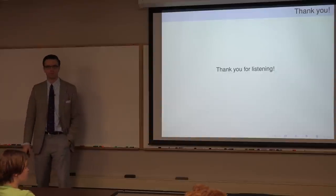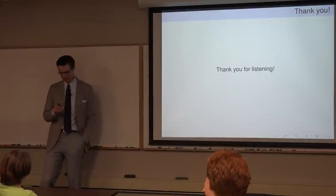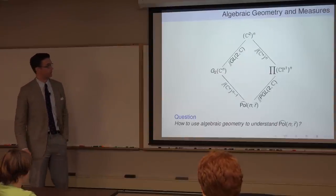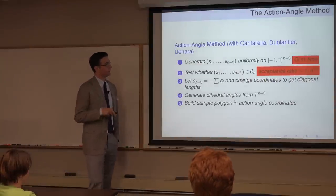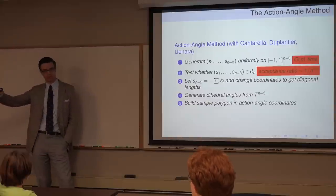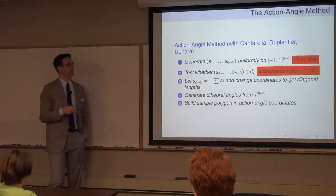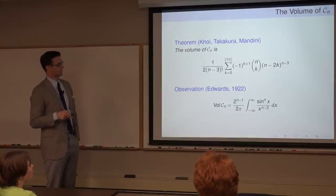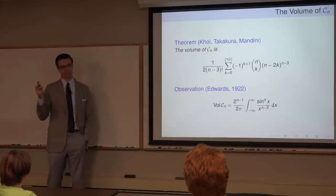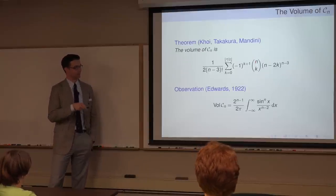Question: how did you come across that integral computation? Answer: co-author Bertrand Duplantier did a Fourier integral calculation and actually computed the integral. Once we saw the form, we went looking for it in the literature and found it in Edwards's 1922 book. It was Bertrand's insight to recognize that the alternating sum could be expressed as that Dirichlet-type integral.